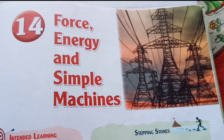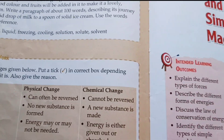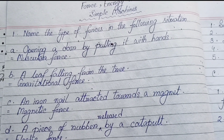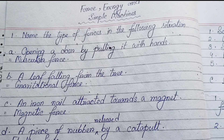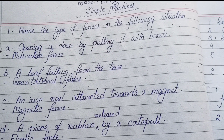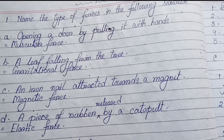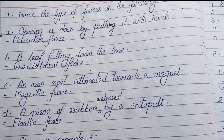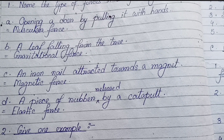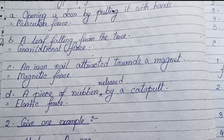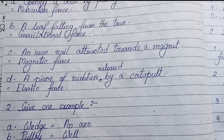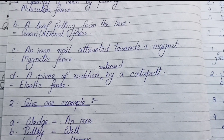Let's start Chapter 14. Exercise question answers. Number one: Name the type of forces in the following situations. (a) Opening a door by pulling it with hands — muscular force. (b) A leaf falling from the tree — gravitational force. (c) An iron nail attracted towards a magnet — magnetic force. (d) A piece of rubber released by a catapult — elastic force.